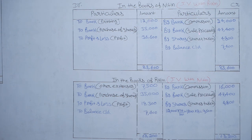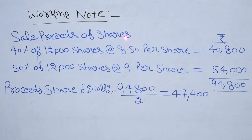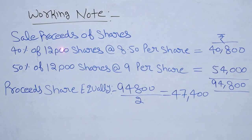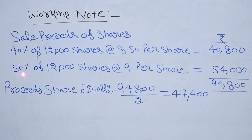To understand sale proceeds, let's work through a working note. Sale proceeds of shares: 40% of total shareholding sold at Rs 8.50 per share — 40% × 12,000 × 8.50 = Rs 40,800. The 12,000 shares come from 7,000 shares purchased from the company plus 5,000 shares received as commission. And 50% of total shareholding sold at Rs 9 per share — 12,000 × 50% × 9 = Rs 54,000.